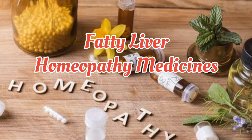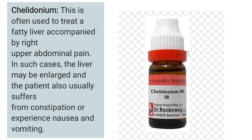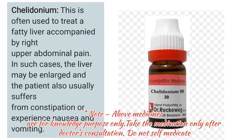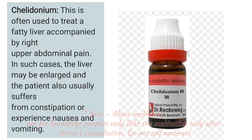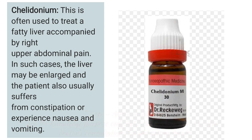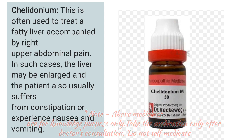The first highly recommended drug is Chelidonium. This is an excellent remedy for fatty liver and is often used to treat fatty liver accompanied by right upper abdominal pain. In such cases, the liver may be enlarged, and the patient may also suffer from constipation or experience nausea and vomiting.